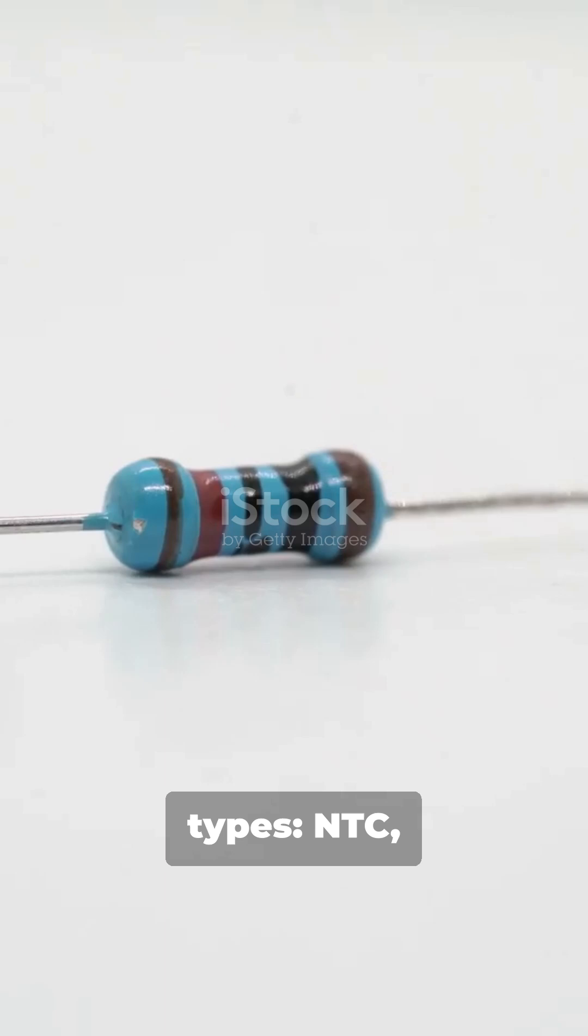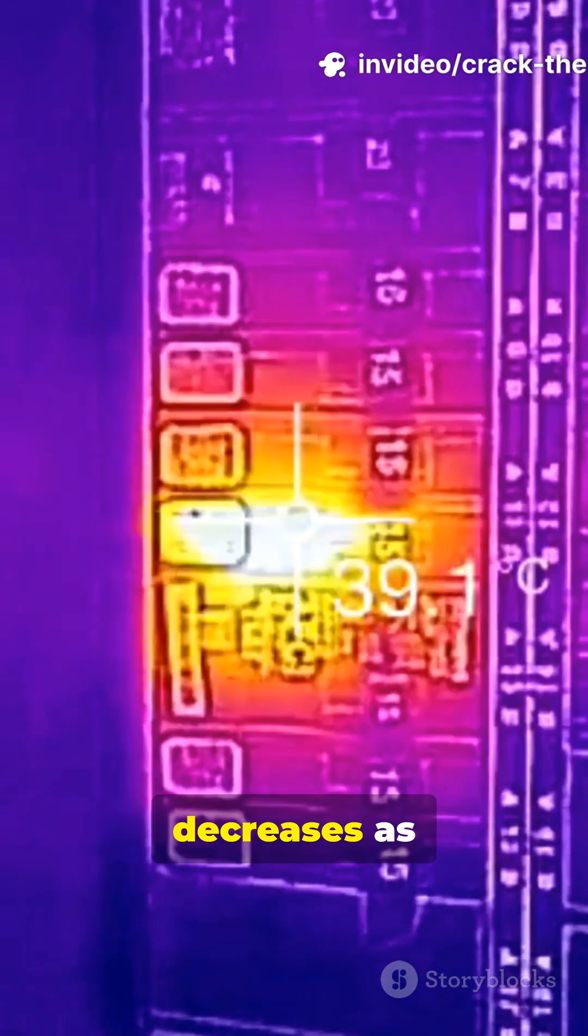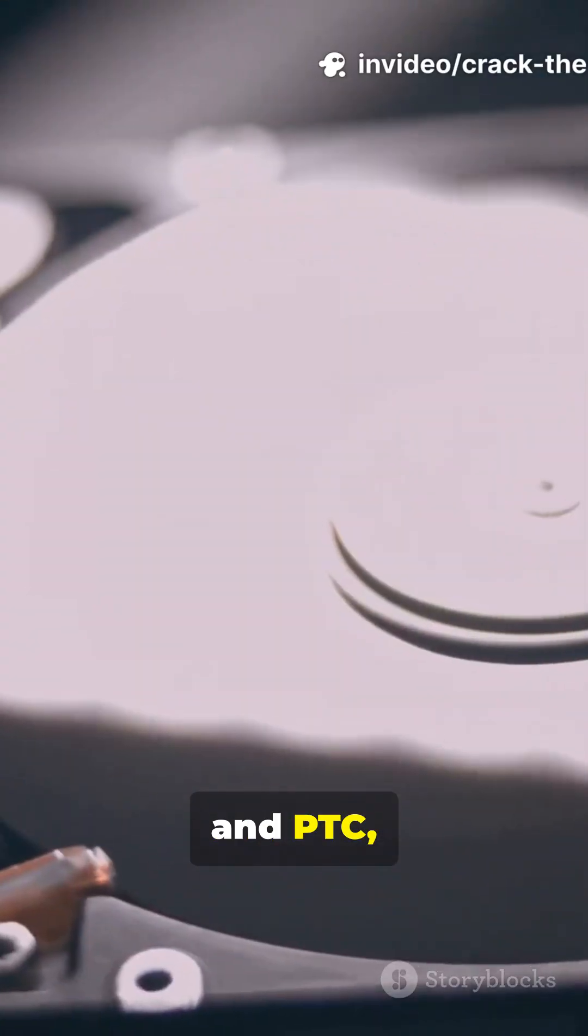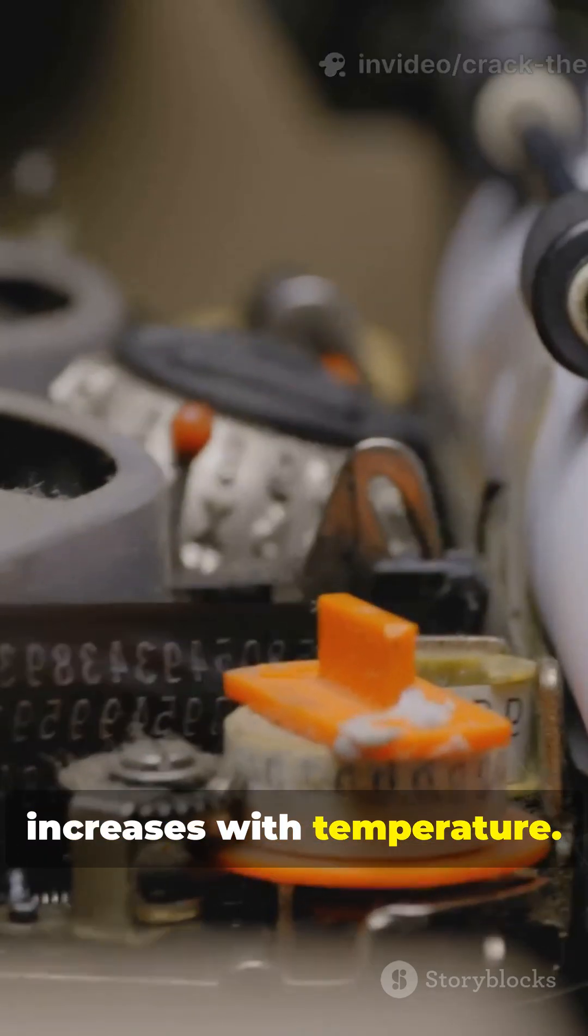There are two main types: NTC (negative temperature coefficient), where resistance decreases as temperature rises, and PTC (positive temperature coefficient), where resistance increases with temperature.